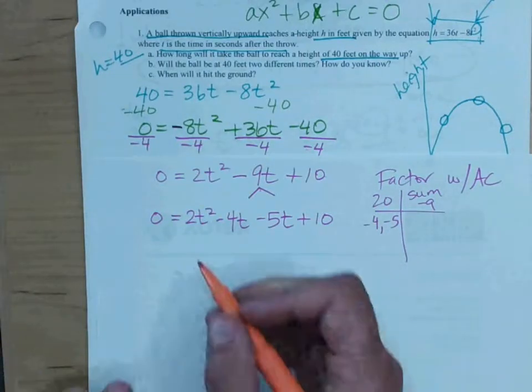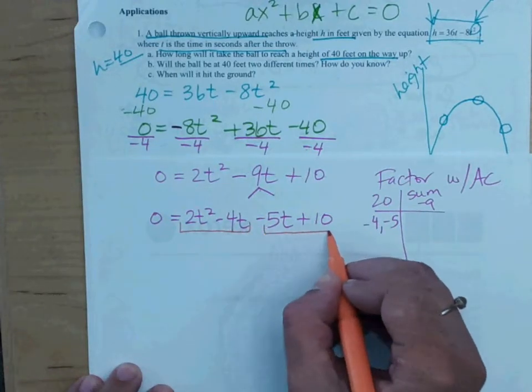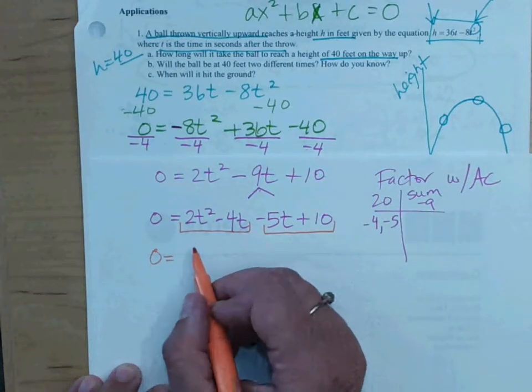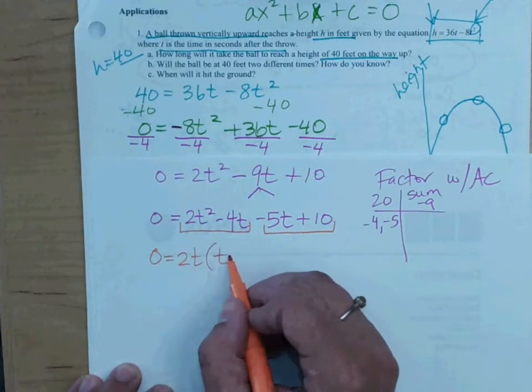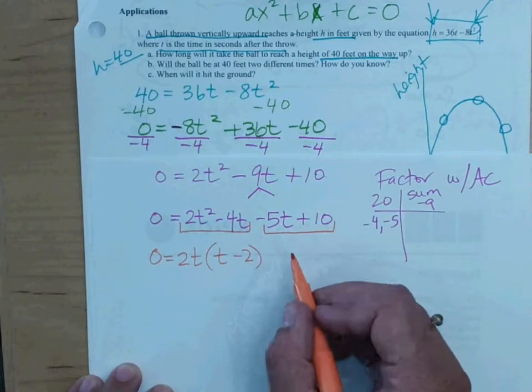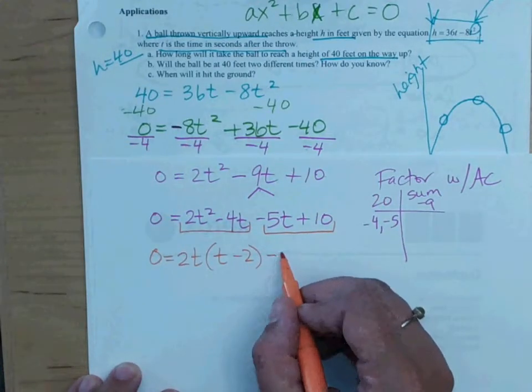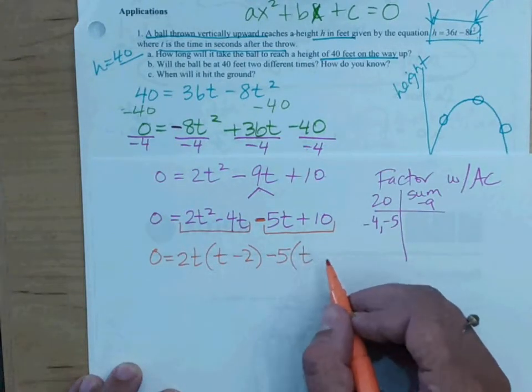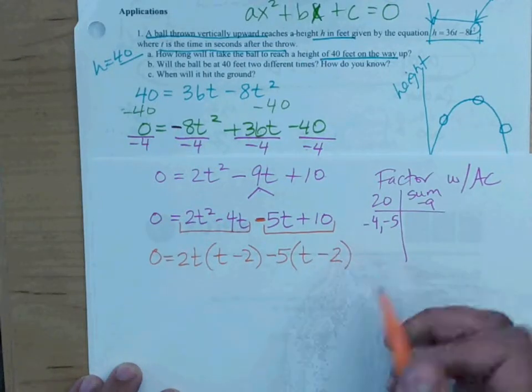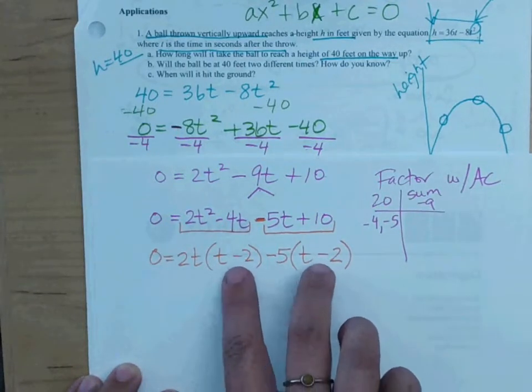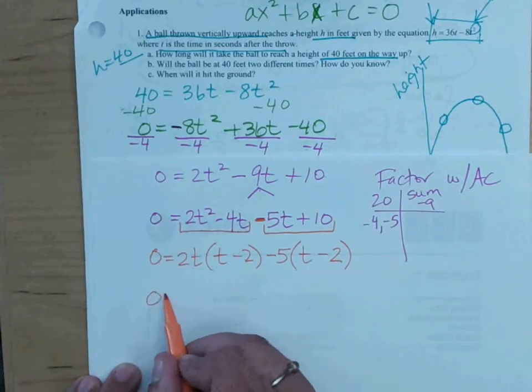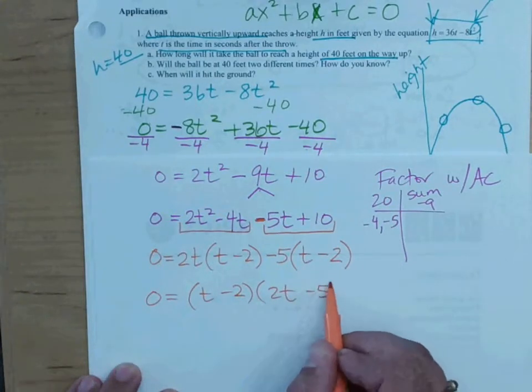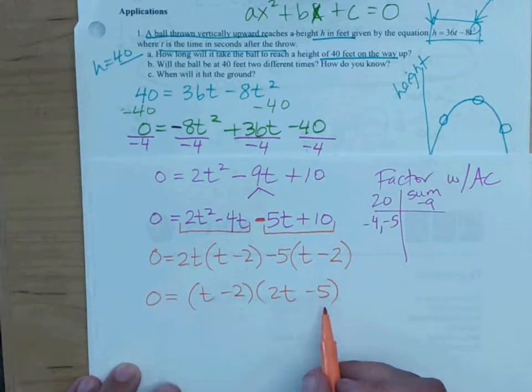What do we do to factor when we have four terms? Factor by grouping. So we're going to group the first two, group the last two. Zero equals, what's the greatest common factor here? 2t. We get t minus 2. What's the greatest common factor here? Negative five, because whenever it starts with a negative, we're going to factor out a negative, and we get t minus 2. And we better have a match here. If we don't have a match, we've done something wrong. So what do we do to keep factoring here? Zero equals 2t minus 5, t minus 2. Okay, great.